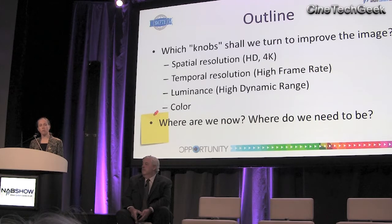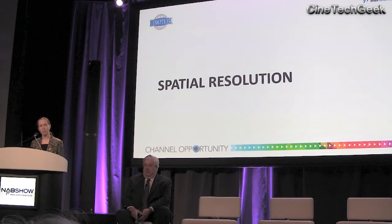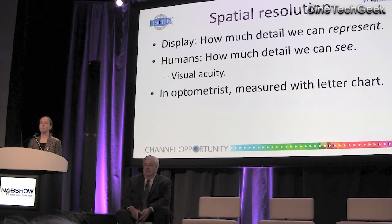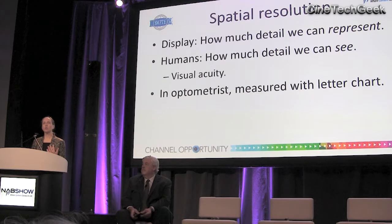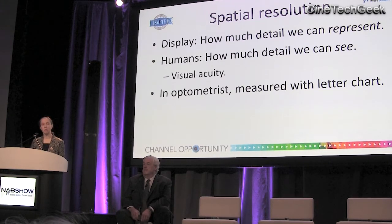I'm going to try to end with a post-it note summary of where we are now and where we should be if we're to reproduce reality. So I'm going to start with spatial resolution. When we talk about the resolution of a display, we mean how much detail it can represent. When we talk about the resolution of the human visual system, we basically mean how much detail we can see — it's also known as visual acuity.